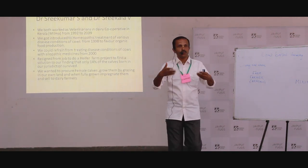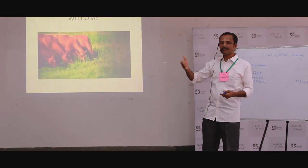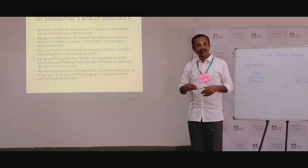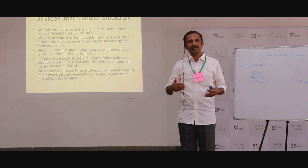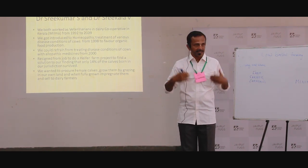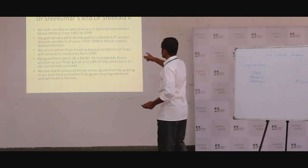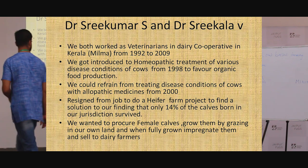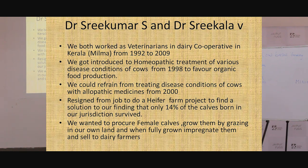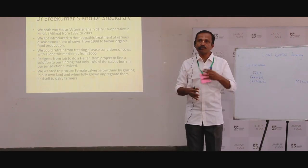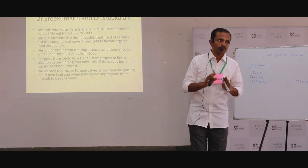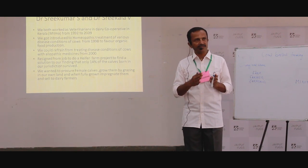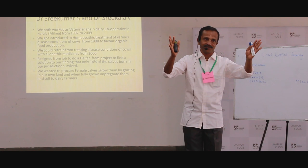Before that we would like to introduce ourselves and how we came into this particular way of thinking. We were both conventional veterinarians. We were working in institutions like Amul — we were treating cows, collecting their milk, processing it, and selling it to the public. From 1992 to 2009 we were working there in the allopathic system. Then in 1998 we got introduced to the homeopathic system, and from 2000 we have not used any allopathic medicines in cows.